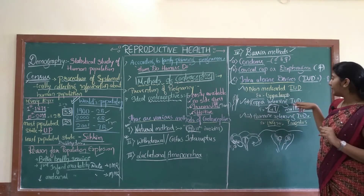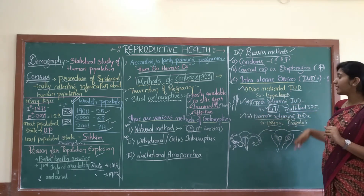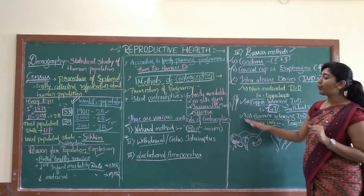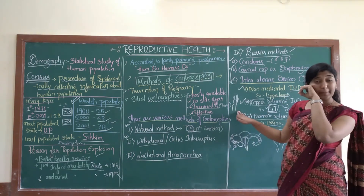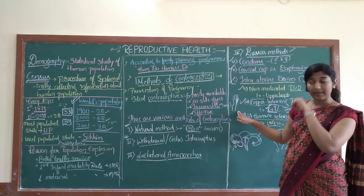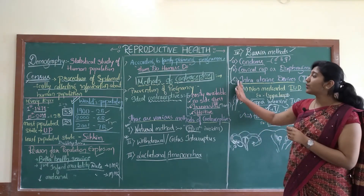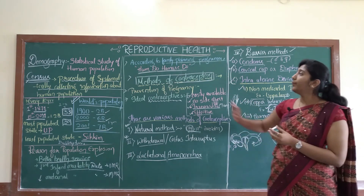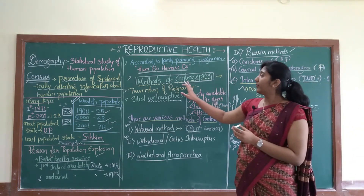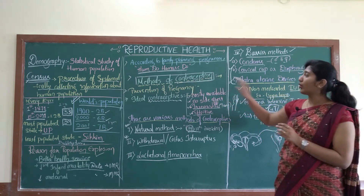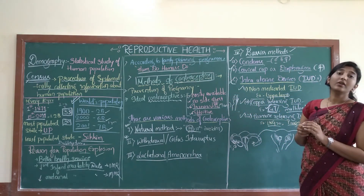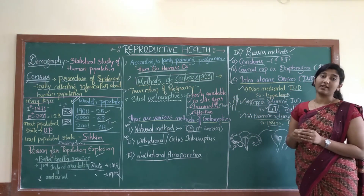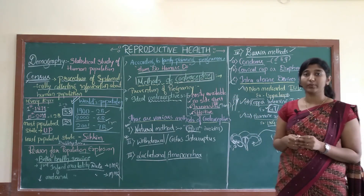In IUDs there are three types: non-medicated, copper-releasing, and hormone-releasing IUDs. This is an important topic and may be asked in your examination. Please be thorough with this concept. The rest of the part on contraception will be studied in the next class. Thank you.